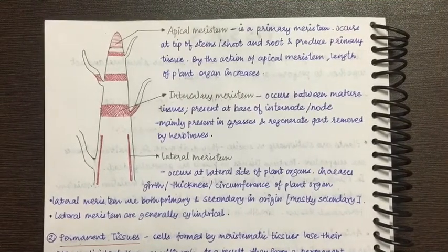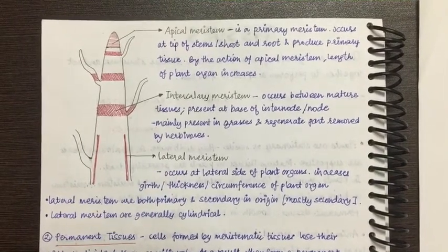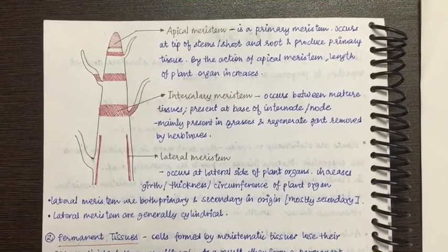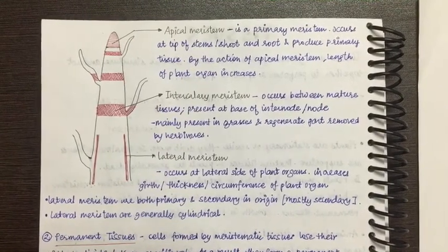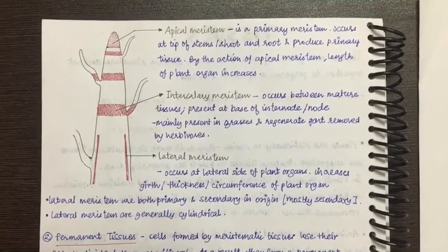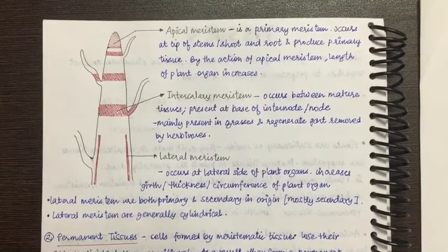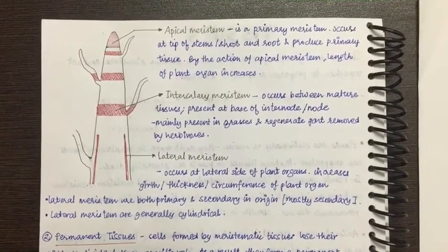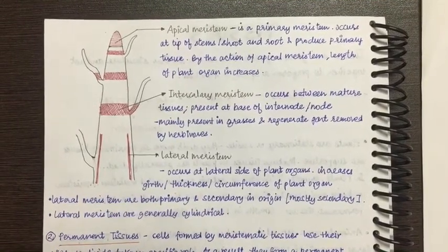Apical meristem is called primary meristem. In the previous lecture I told you about primary meristem and secondary meristem. Primary meristem is responsible for the length of the plant — the length increases first, and then the thickness increases via secondary meristem. Apical meristem, being primary meristem, is found at the tip: the root apex and the shoot apex.